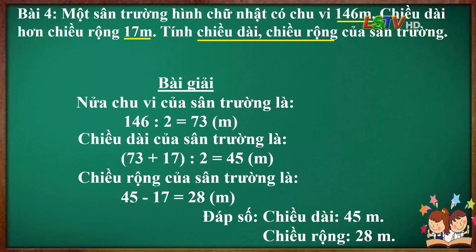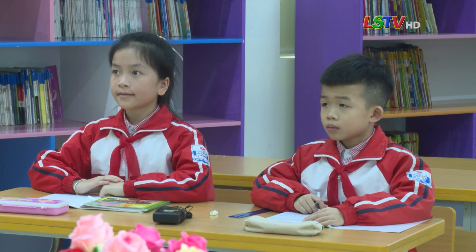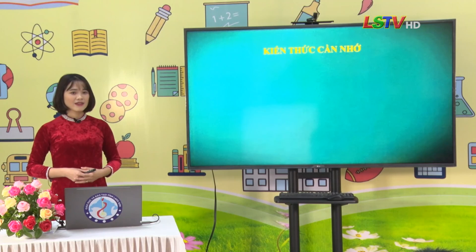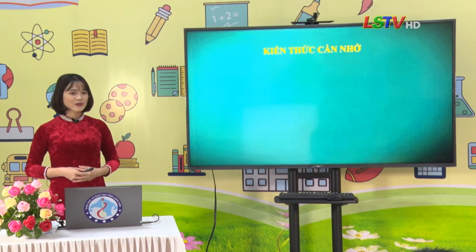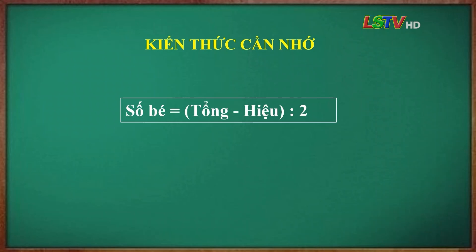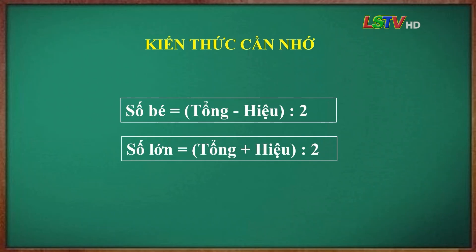Cô có lời khen đến tất cả các em có đáp án đúng. Qua bài học ngày hôm nay, các em đã được ôn tập một dạng toán cơ bản của lớp 4 là tìm 2 số khi biết tổng và hiệu của 2 số đó. Đối với dạng toán này, các em cần ghi nhớ 2 công thức: số bé bằng (tổng trừ hiệu) chia 2; số lớn bằng (tổng cộng hiệu) chia 2.